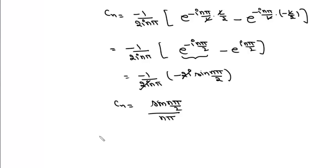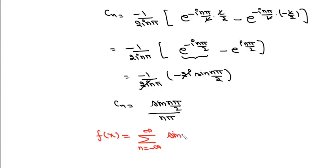Once we have this c_n, we can write the Fourier representation of f(x) as a summation where n varies from minus infinite to plus infinite of sin(n pi/2) upon n pi, times e to the power iota n pi x by L.